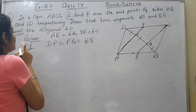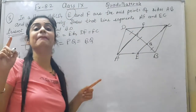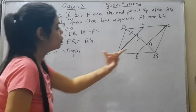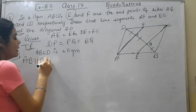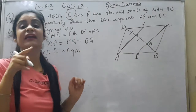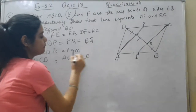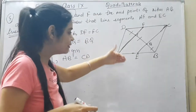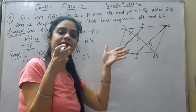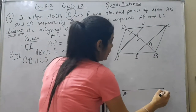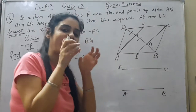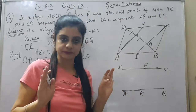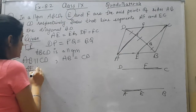Let me explain one thing. The whole figure ABCD is a parallelogram. If ABCD is a parallelogram, then AB is parallel to CD, because opposite sides of a parallelogram are parallel. Since AE is part of AB and FC is part of CD, AE is also parallel to FC. So I can write AE is parallel to FC — this is equation 1.